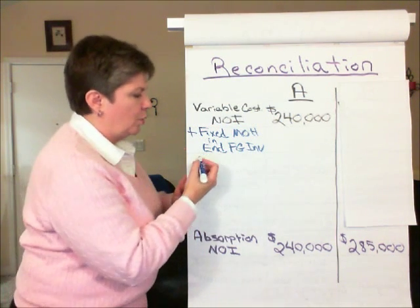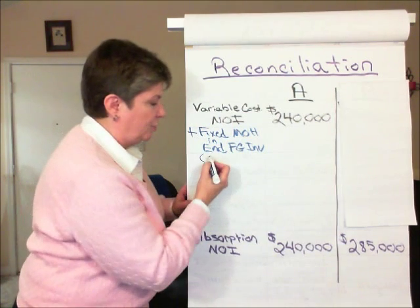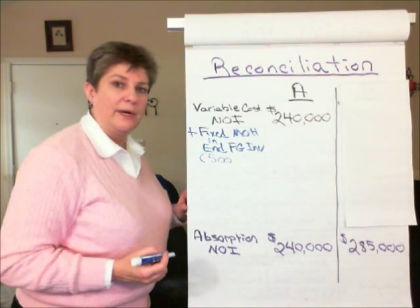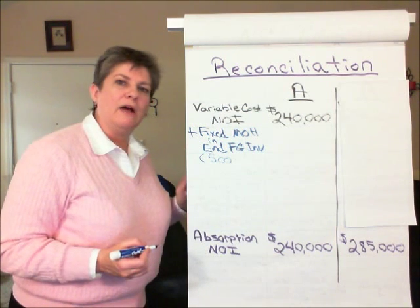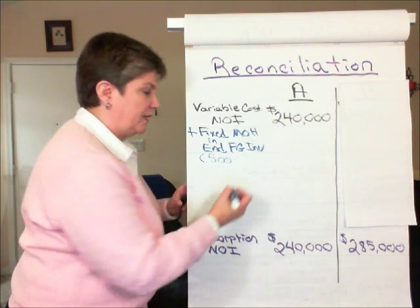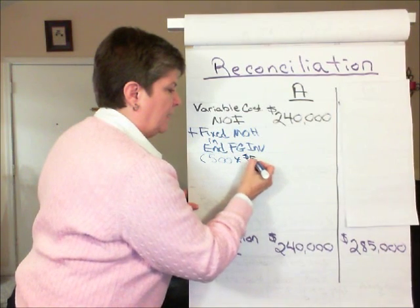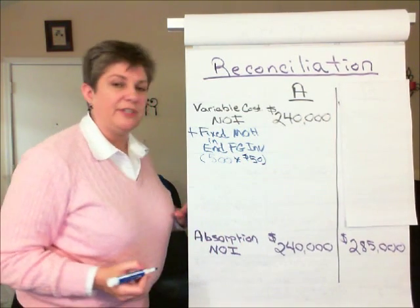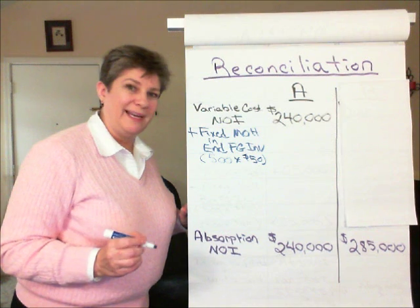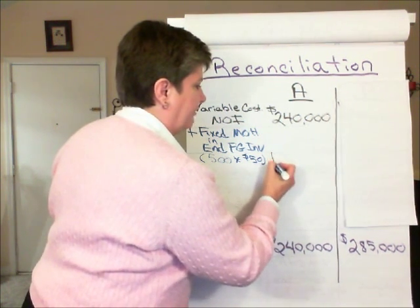So in Scenario A, we had 500 units in ending inventory, and our fixed overhead per unit was $50. So 500 times $50 — the fixed overhead in ending inventory is $25,000.